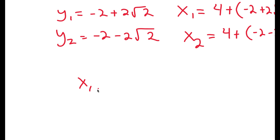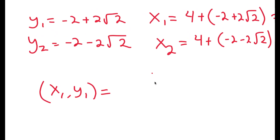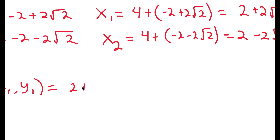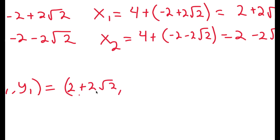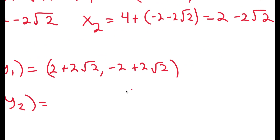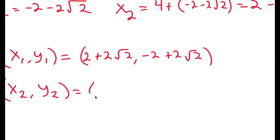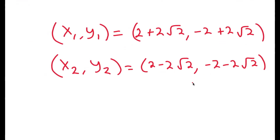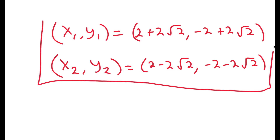So x₁ comma y₁, which is our first solution to the system of equations, is 2 plus 2 root 2 comma negative 2 plus 2 root 2. And x₂ comma y₂ equals 2 minus 2 root 2 comma negative 2 minus 2 root 2. This is our solution to the system of equations.